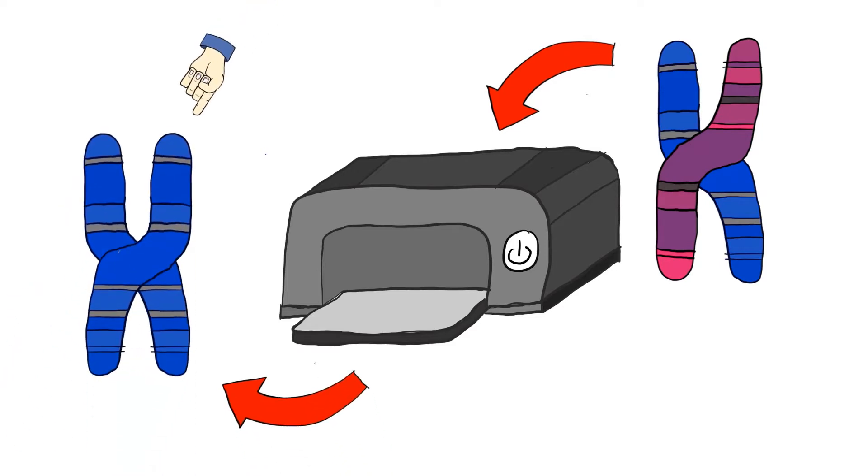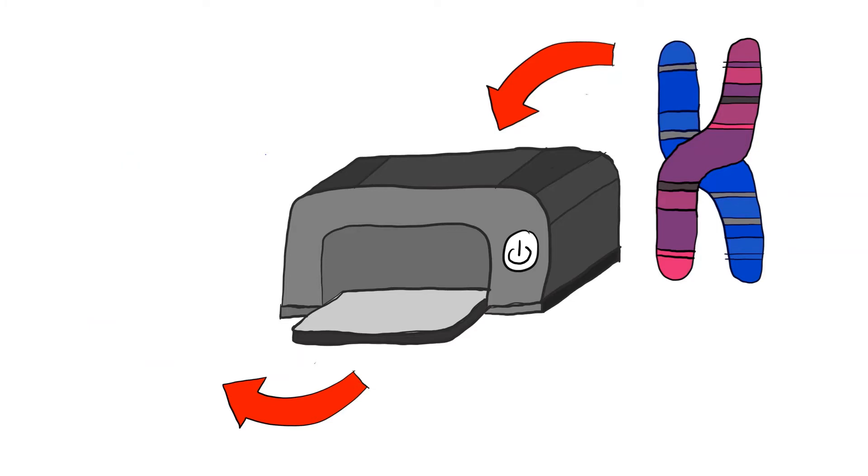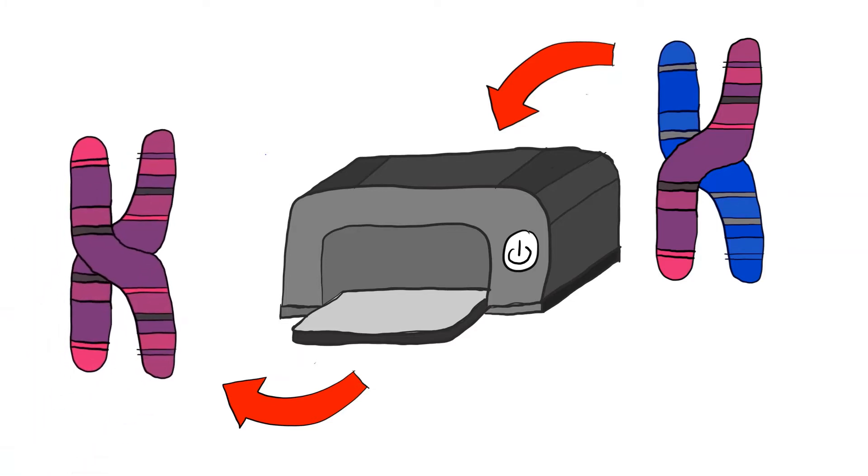both chromosomes have my dad's imprint, even though this chromosome still came from my mum. I only imprint in the same way as my dad, because I am male. But if I was female, I would imprint in the same way as my mum.